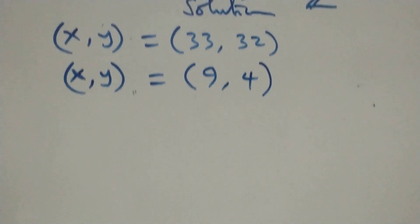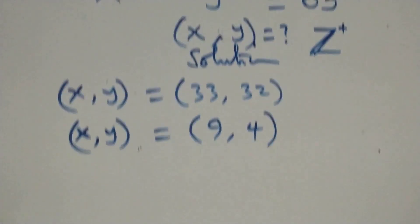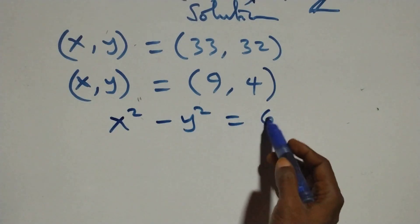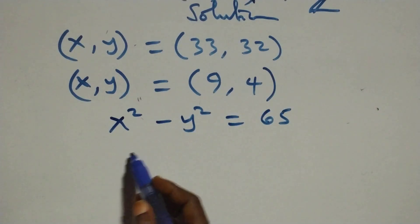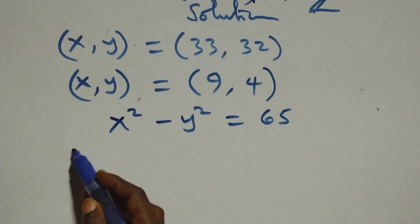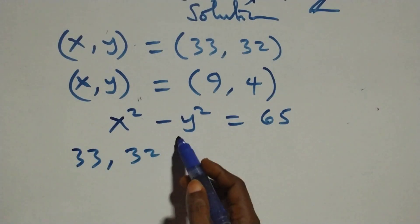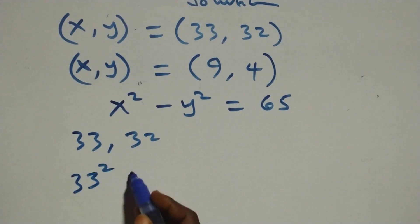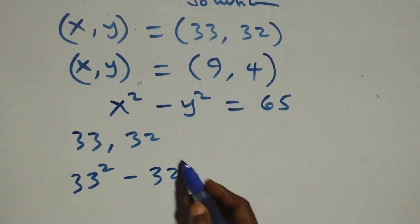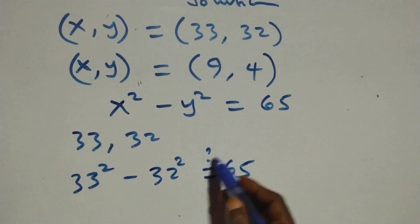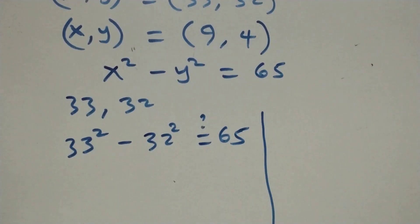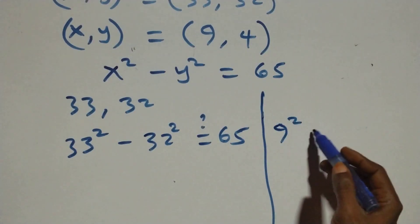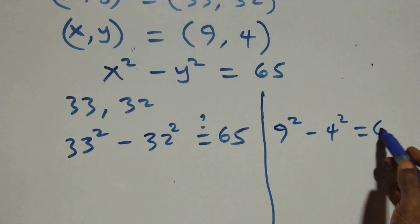Now we check whether these solutions satisfy the original equation x squared minus y squared equals 65. For the first case (33, 32): 33 squared minus 32 squared should equal 65. For the second case (9, 4): 9 squared minus 4 squared should equal 65.